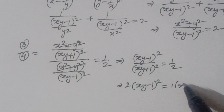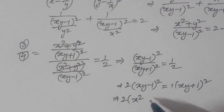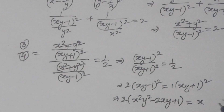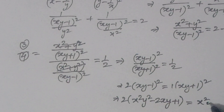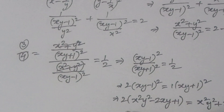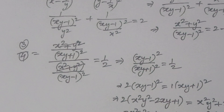Cross-multiplying: 2(xy - 1)^2 = (xy + 1)^2. Applying the formula (a±b)^2: 2(x^2y^2 - 2xy + 1) = x^2y^2 + 2xy + 1. So 2x^2y^2 - 4xy + 2 = x^2y^2 + 2xy + 1.